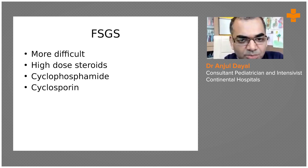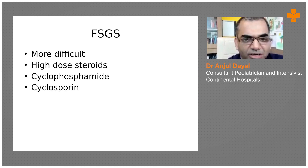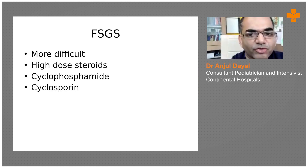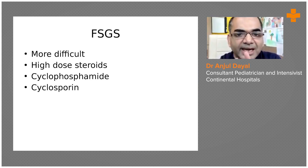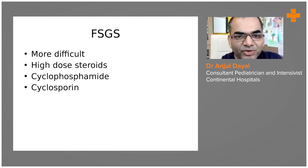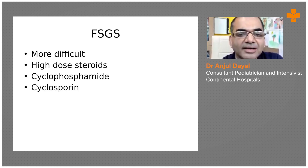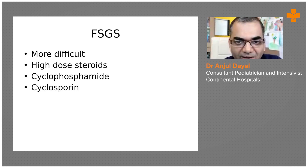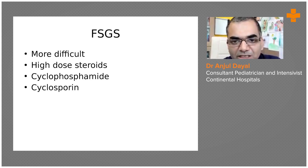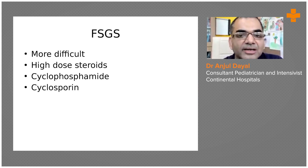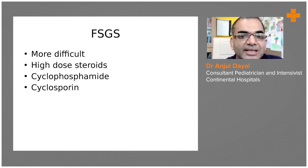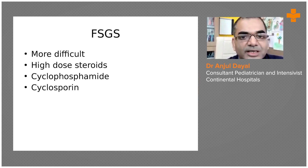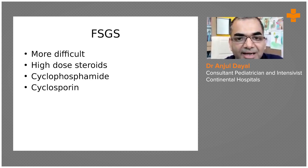Children with FSGS who develop global sclerosis are at risk for end-stage renal disease and may require renal transplant. To summarize nephrotic syndrome: first, define it by looking at proteins. Second, the commonest cause is minimal change disease, which has a good prognosis. The child must be thoroughly worked up, with infections ruled out and treatment with steroids initiated.